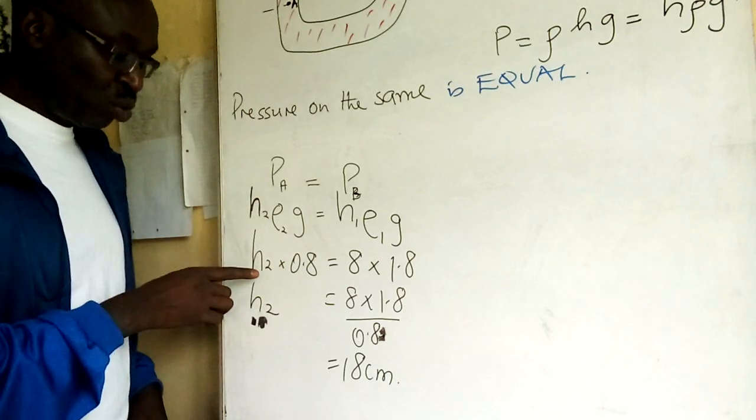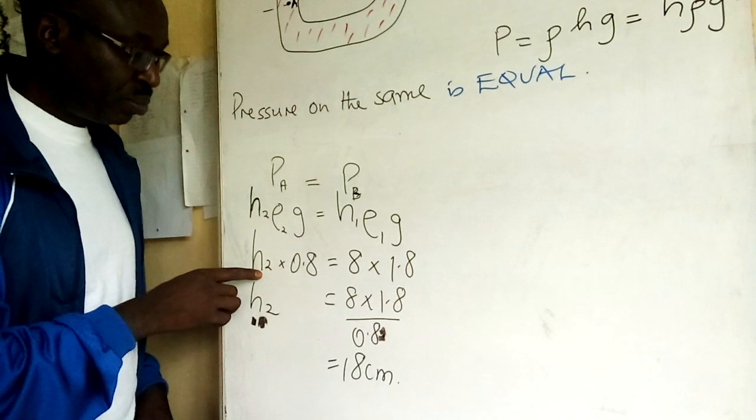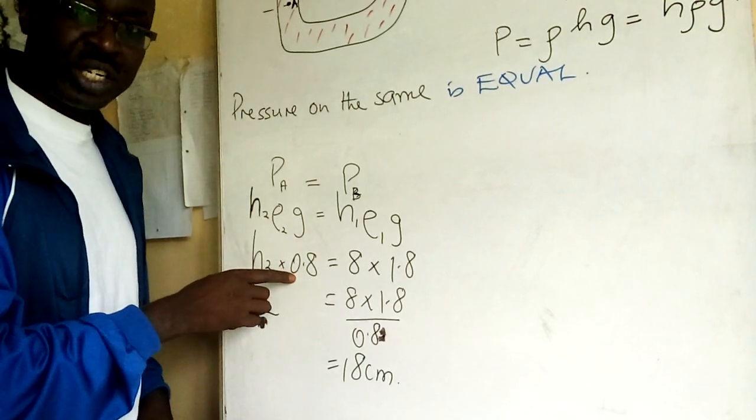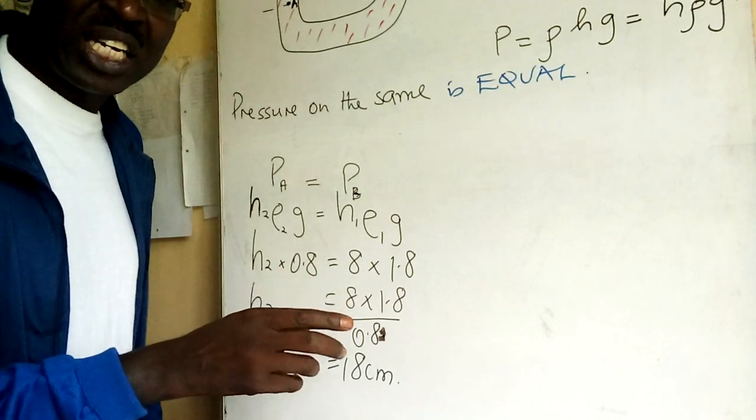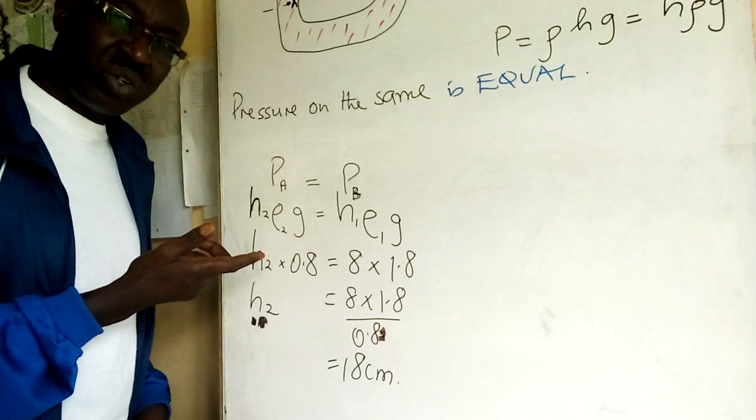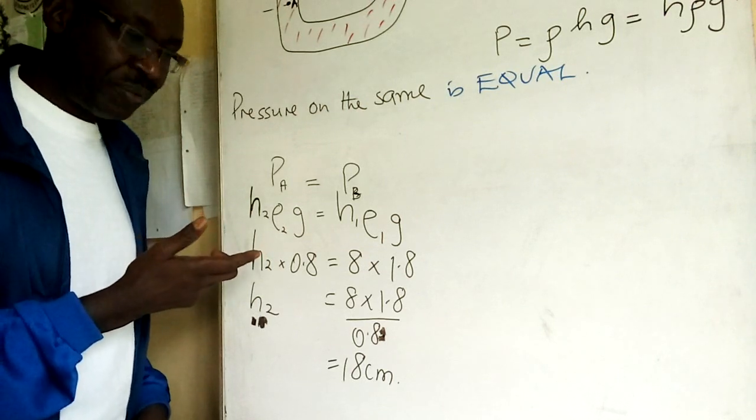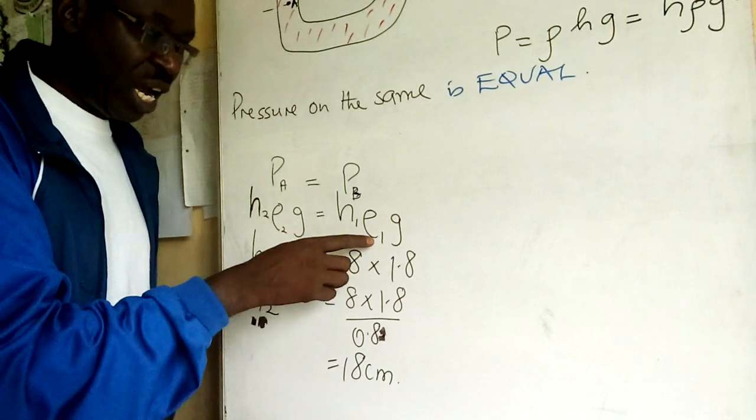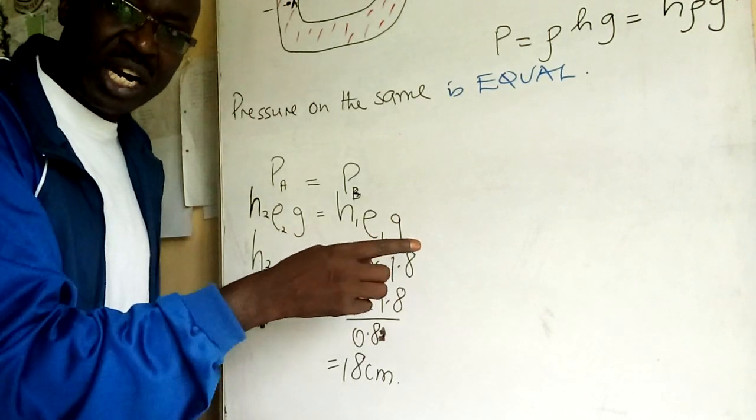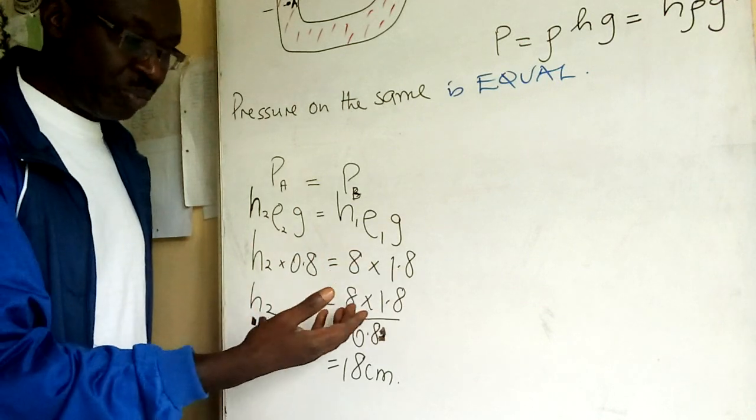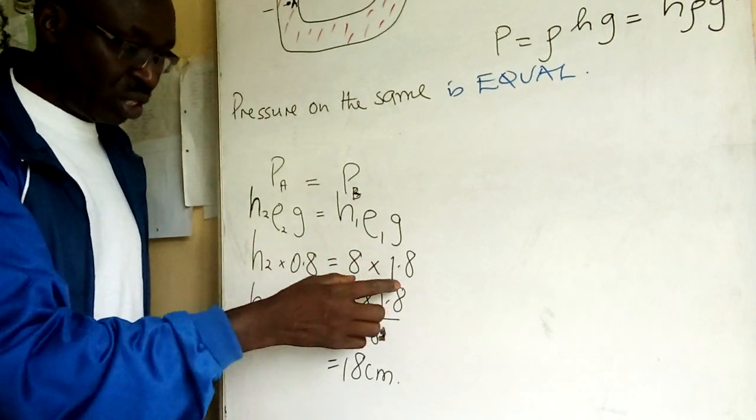So H2 is what we are being asked. Density 2 we are given of liquid D2 is 0.8 grams per cubic centimeter, so automatically my height will be in centimeter. H1 we are given as 8 centimeters and density 1 is 1.8 gram per cubic centimeter. So I substitute, then compute. H2 is this divided by that.